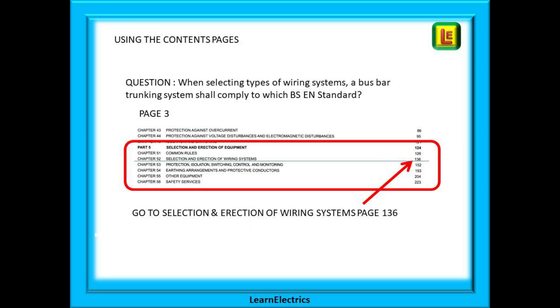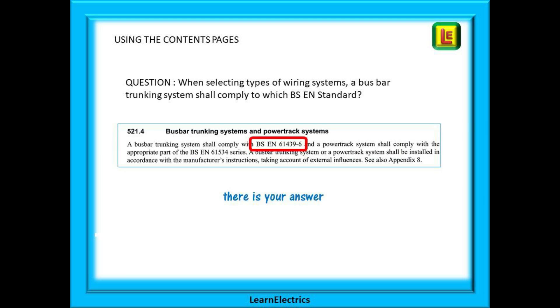A typical question might ask when selecting types of wiring systems a bus bar trunking system shall comply to which BS EN standard. So start your search on page 3 and straight away we can see chapter 52 selection and direction of wiring systems page 136. Right in the middle of page 136 is regulation 521.4 bus bar trunking systems and there is our answer.